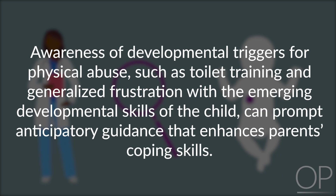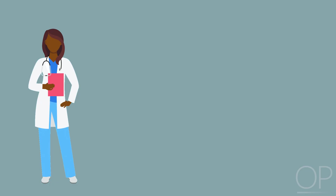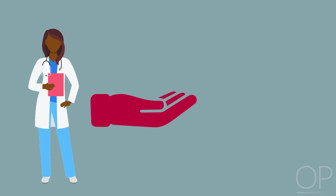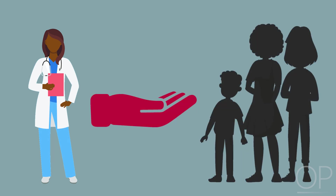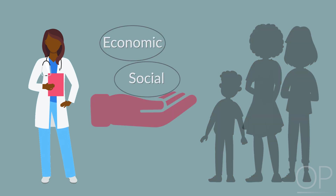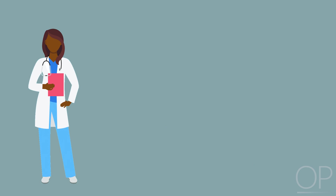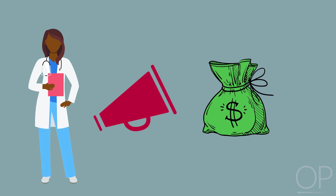Awareness of developmental triggers for physical abuse, such as toilet training and generalized frustration with the emerging developmental skills of the child, can prompt anticipatory guidance that enhances parents' coping skills. Pediatricians can also develop a longitudinal, supportive relationship with families, in which they regularly assess for abuse risk factors and provide resources to help address the family's social and economic needs. Finally, the pediatrician can serve as an advocate for funding and implementation of evidence-based child abuse prevention programs, whether at the national or community level.